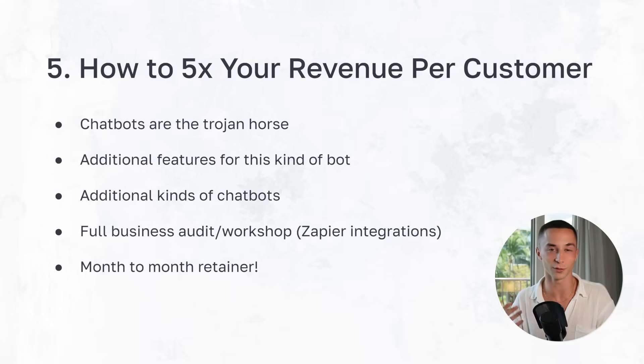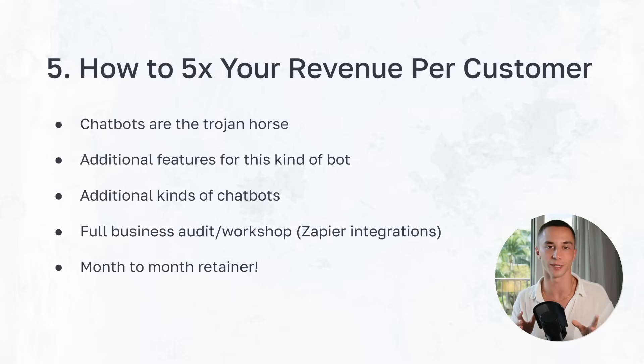With that, you've serviced your very first AI automation agency client. It doesn't really count as an agency until you've hired people, but you've done it as a freelancer and you've started to learn the skills and experience you need to become an AI automation expert. As promised, I'm going to throw in this bonus module of how to 5x your revenue per customer using the exact methods I use in my business every day. In order to 5x your revenue per customer, you need to start doing upsells — and there is a little bit of a knack to it.